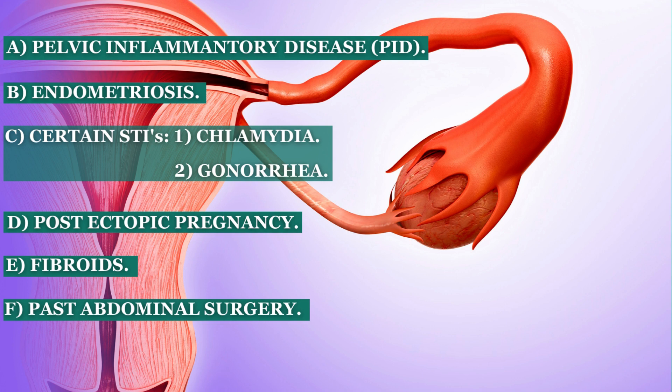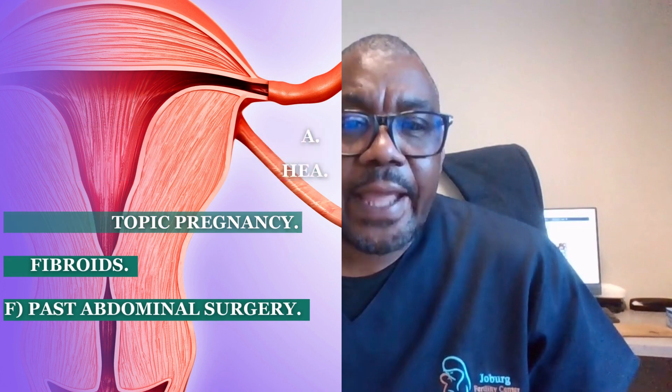Fibroids can also apply pressure to your tubes, blocking them so they become swollen and fluid is retained. The egg and sperm cannot meet. Any abdominal surgery, such as having the appendix removed or bowel surgery, can also lead to adhesions and then blockage of the tube.